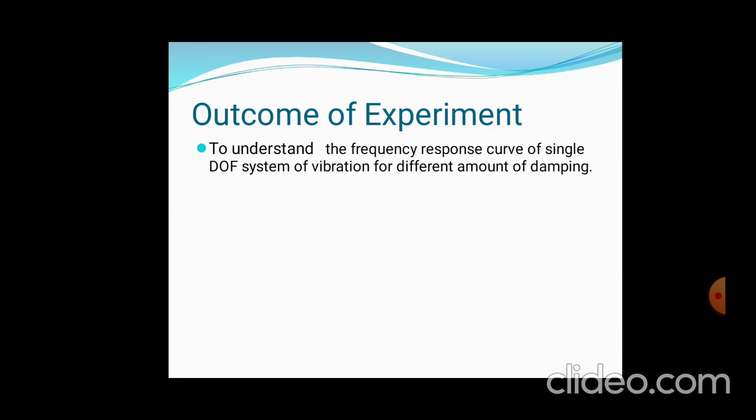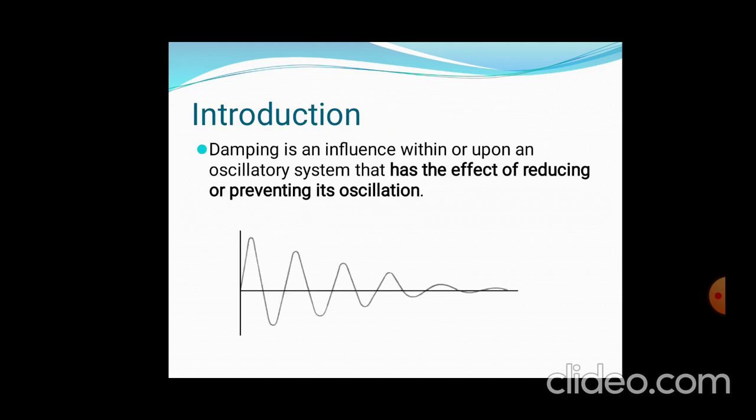For a single degree of freedom system with different amounts of damping. Now, in introduction: what is damping? Damping is the resistance to the motion of an oscillatory system, and it has the effect of reducing the oscillations, which is shown in the graph.